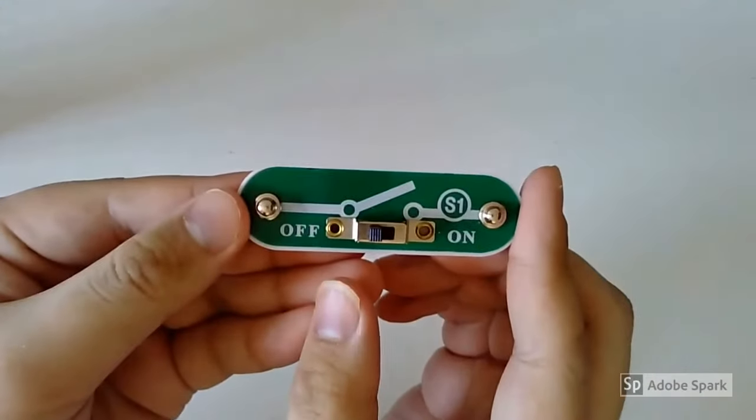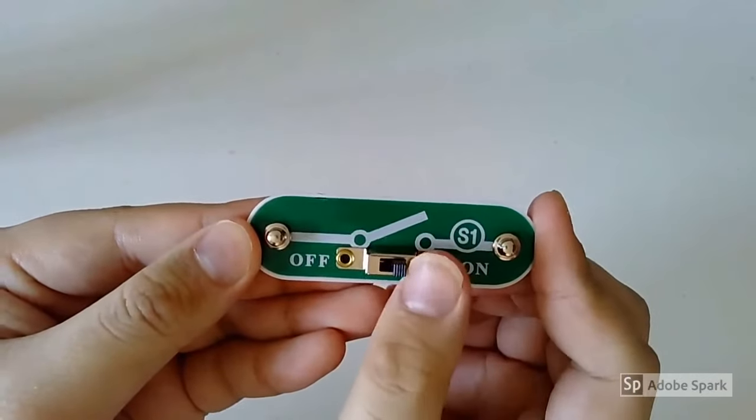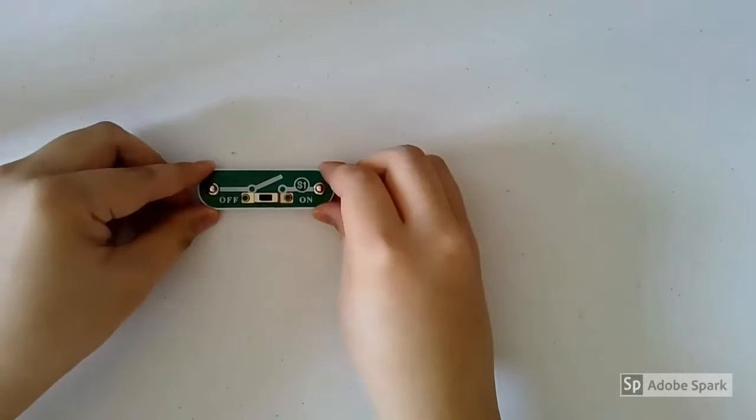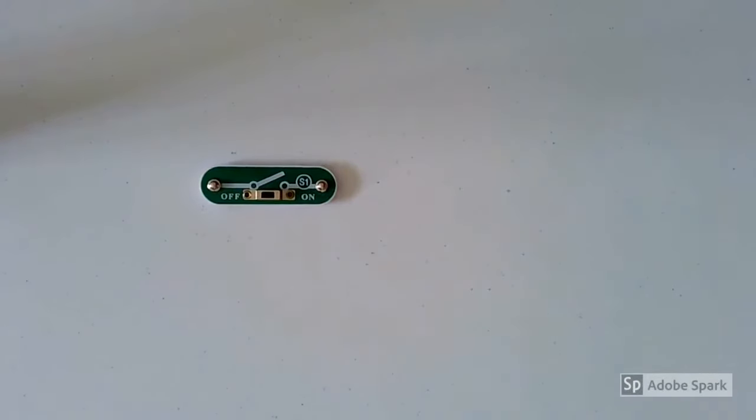Let's start with the slide switch. It works kind of like a light switch. You turn it on, and electricity flows through. You turn it off, electricity is cut off at that point.